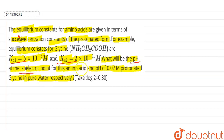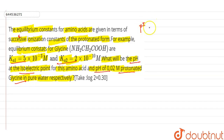We are given Ka1 and Ka2 and we have to calculate the pH at the isoelectric point of the amino acid and the pH of 0.02 molar protonated glycine. The pH at the isoelectric point, denoted by pI, is equal to the average of pKa1 and pKa2: pI = (pKa1 + pKa2) / 2.